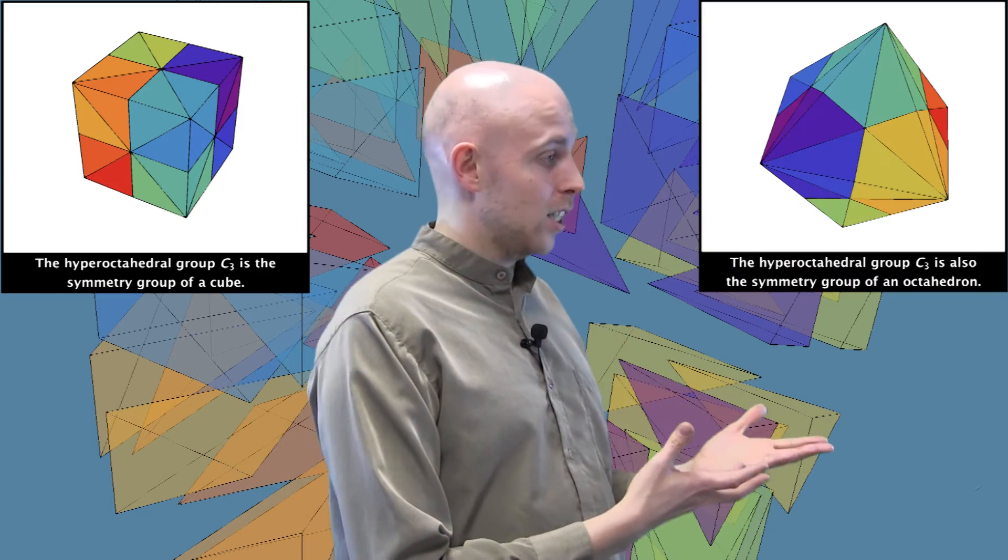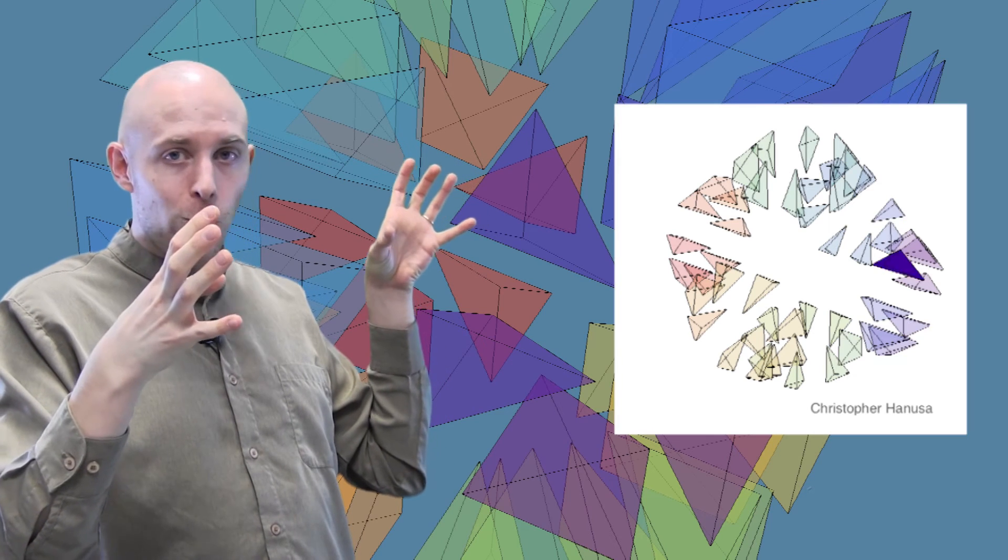Our last example is the hyperoctahedral group, or hypercubical group, which is the set of reflections of an n-cube or an n-octahedron. Once again, reflections correspond to slicing the polyhedron along the plane of symmetry, and then turning it inside out through that mirror. Now let's explode the octahedron again. Let's slice the octahedron by all nine planes of symmetry. And once we do that, we'll explode it. And we'll see that it breaks it into 48 pieces.